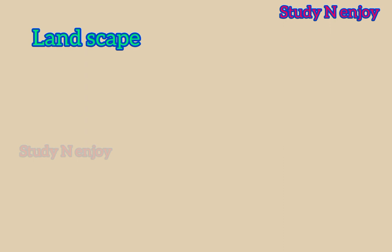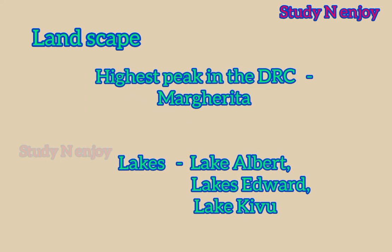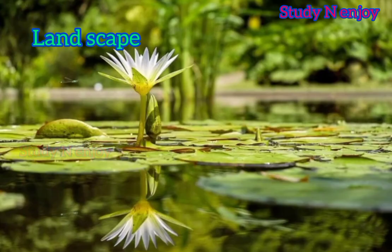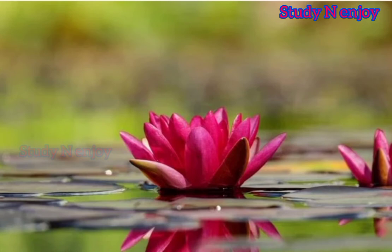Now we can look at the landscape of the DRC. We can see a lot of mountains here. The Margarita Peak is the highest peak in the Democratic Republic of Congo. There are also several lakes in the DRC — Lake Albert, Lake Edward, Lake Kivu, etc. are the main lakes. Many of these lakes are situated in the eastern part of the country. We can see mountains, rivers, and lakes in the DRC.